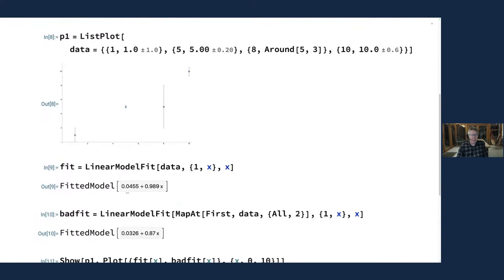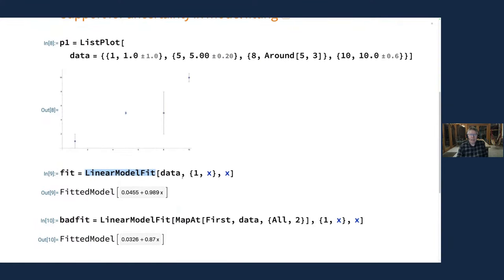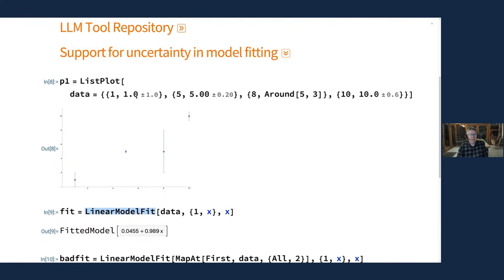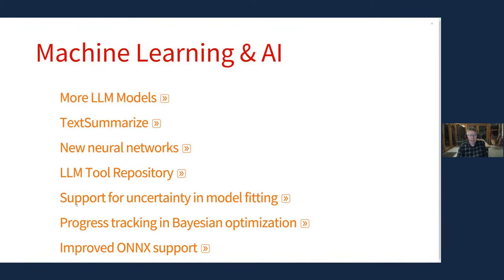There are no new functions here — this is LinearModelFit, which has been around for years, combined with Around for representing error on data, which has been around since about version 10. There's other infrastructure too: Bayesian optimization could be quite slow, so now there's a progress tracker and the ability to restart and continue optimization from a checkpoint. In the world of neural networks, ONNX is the import-export format, and there are further improvements in the range of things we can import, the speed of import, and support for GPU within ONNX import.